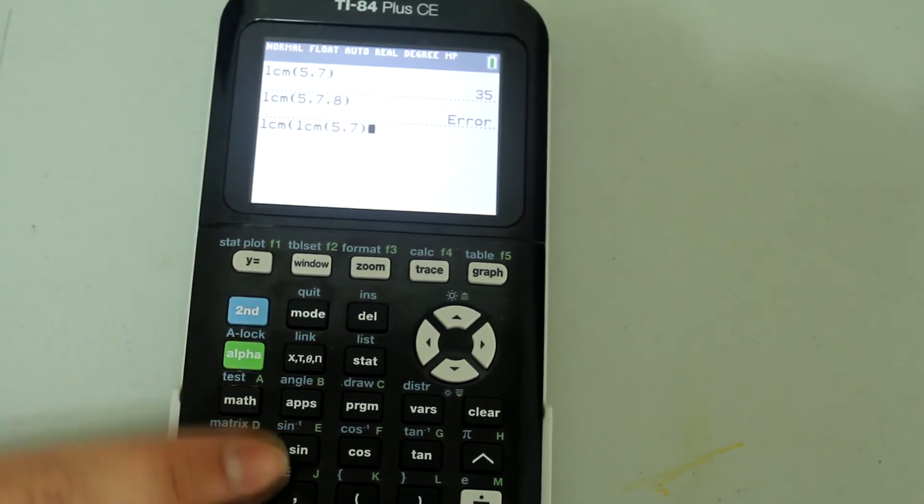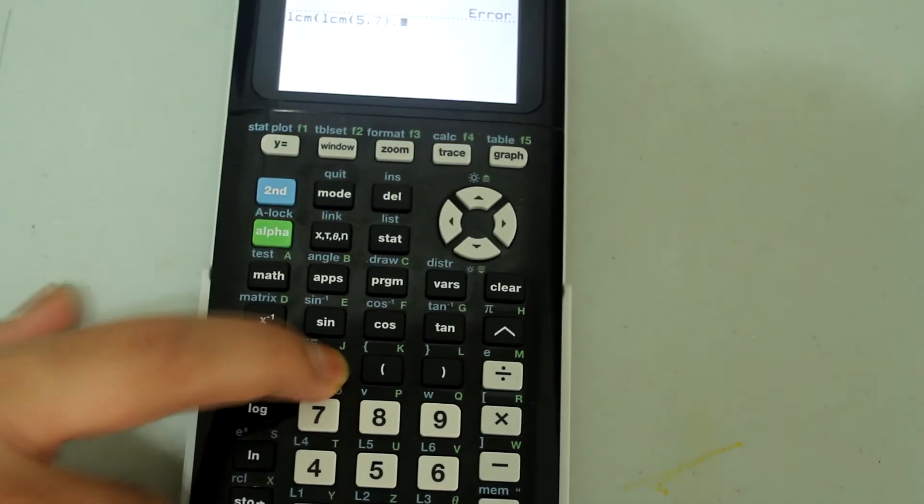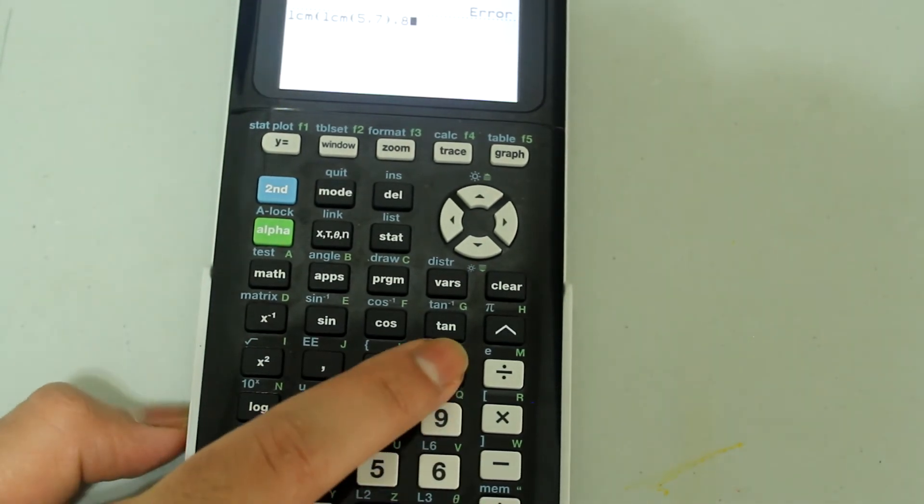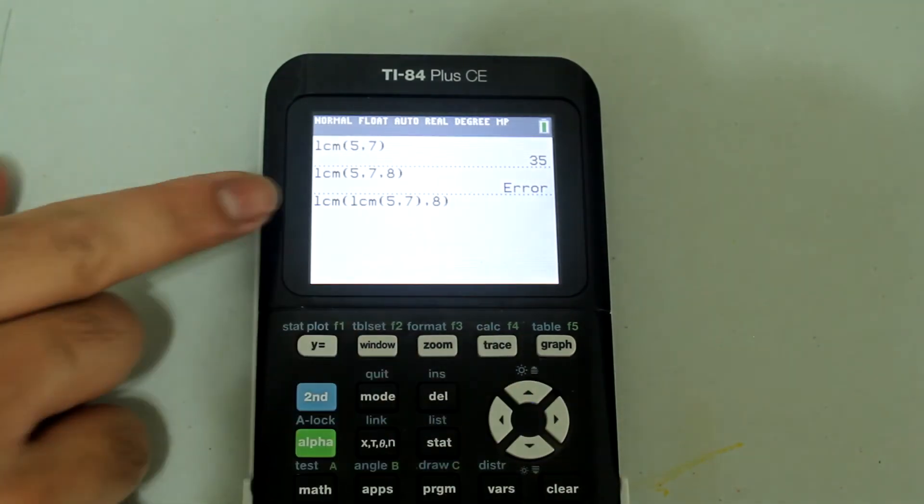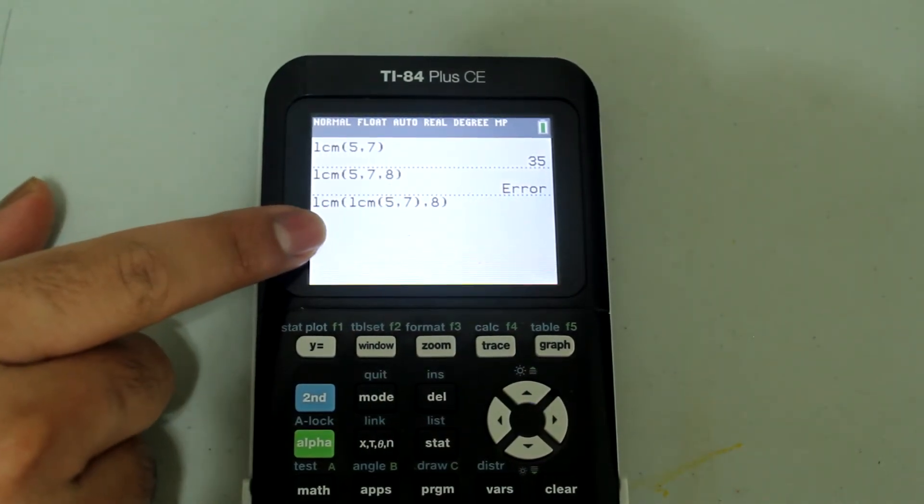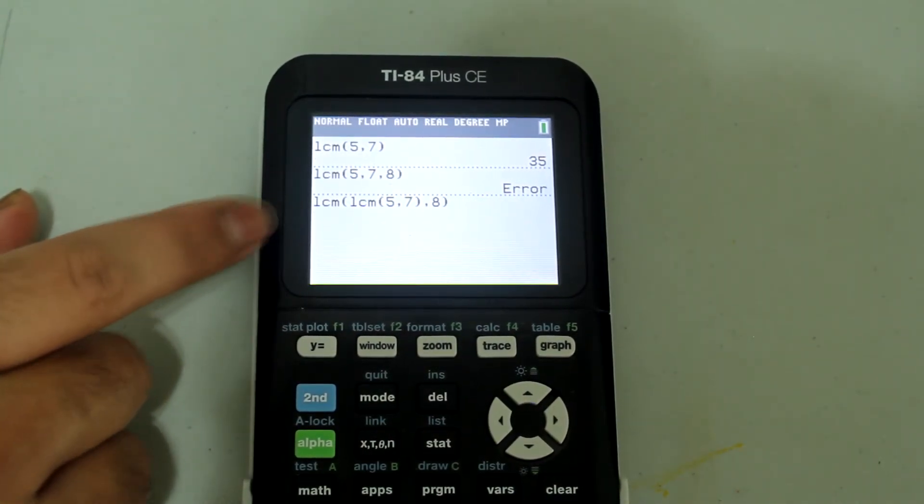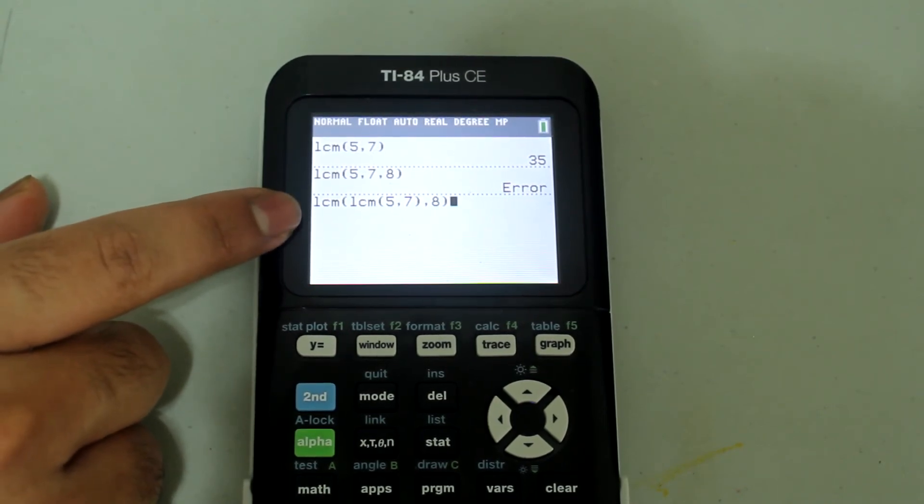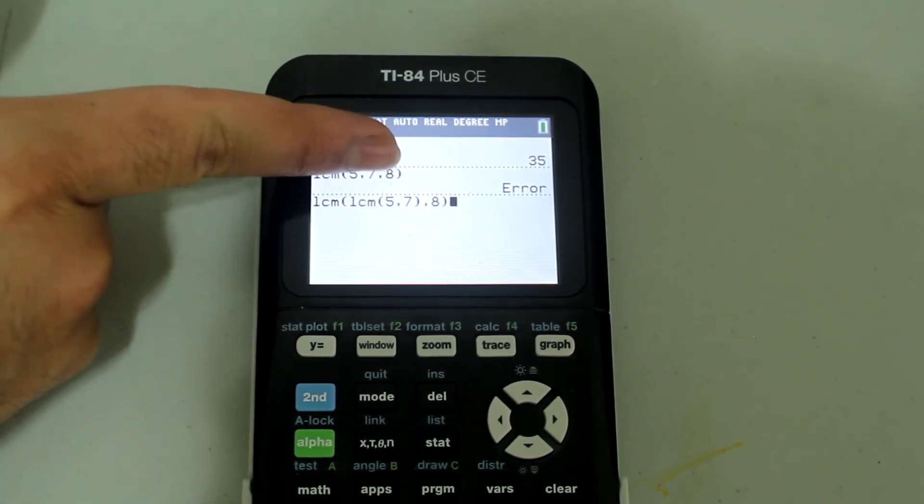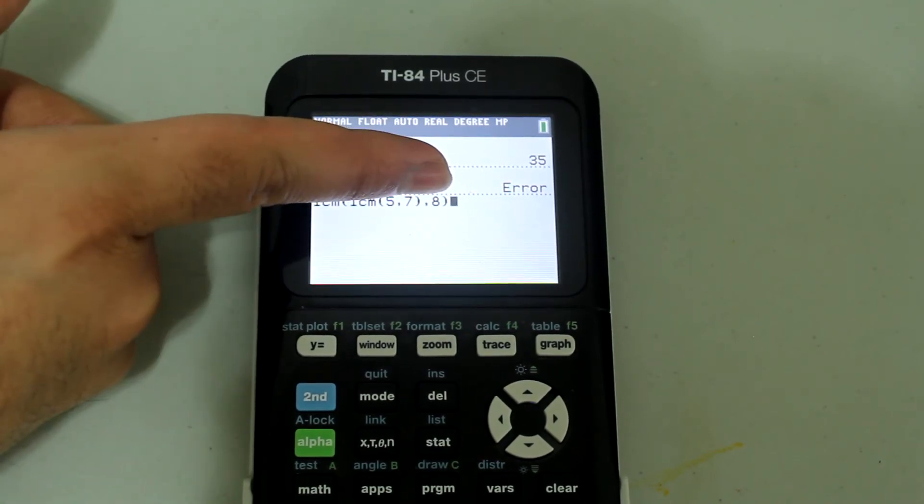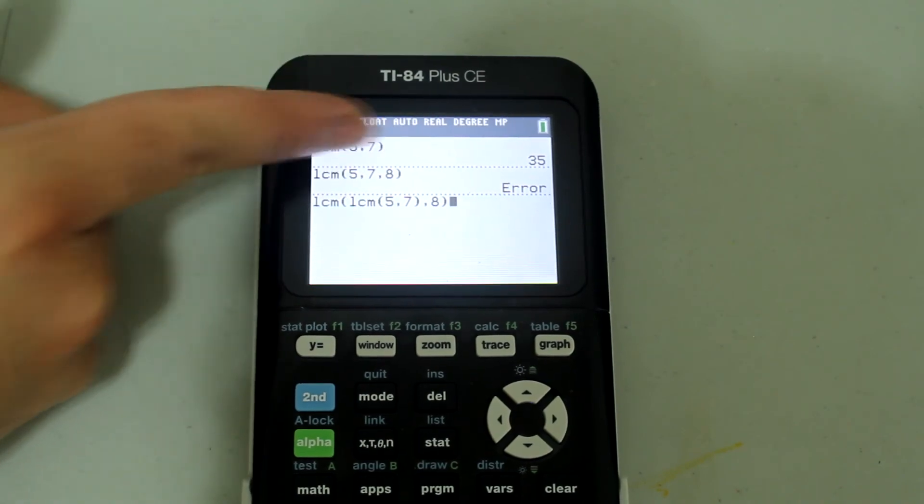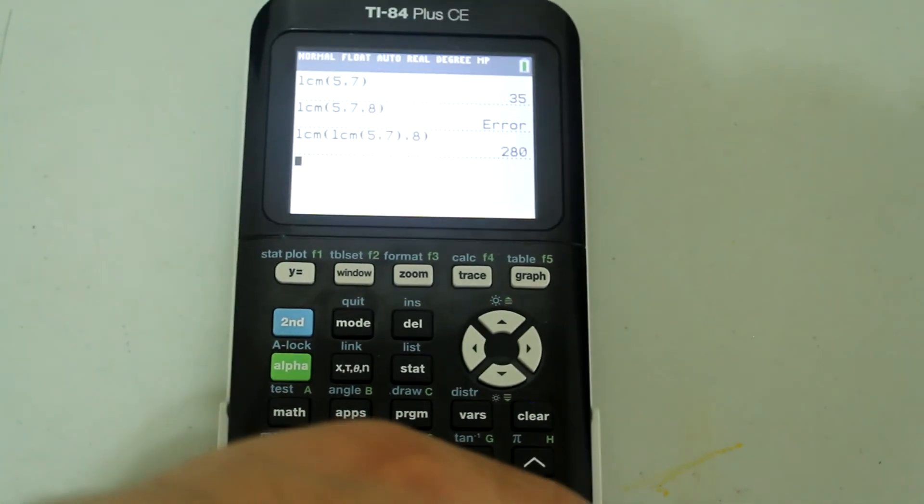I'm going to use a comma and then type in 8 and close the parenthesis. What I have here is effectively two numbers or entries within the outer LCM command. So I'm taking the least common multiple of 5 and 7 and comparing that to 8 to find the least common multiple of all three numbers. And if I press enter now, I get the answer as 280.